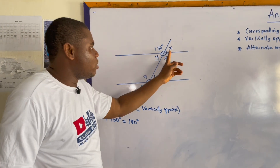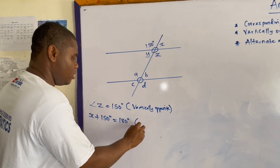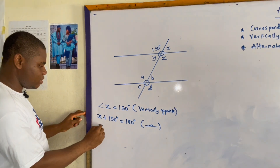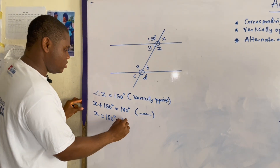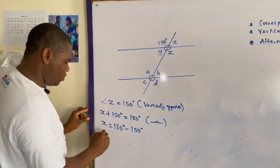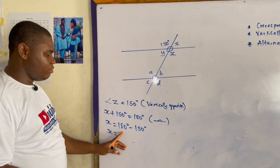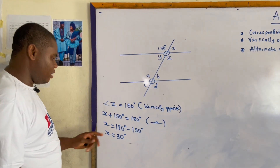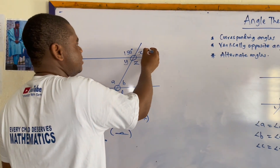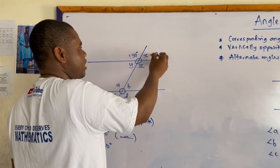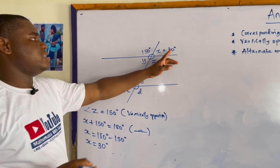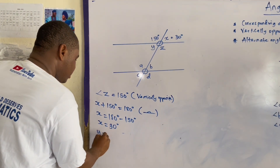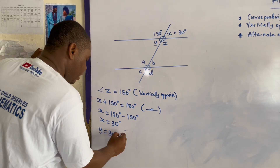We can also find X by saying X plus 150 degrees equals 180 degrees, because this is an angle on a straight line. So X equals 180 degrees minus 150 degrees, which gives us 30 degrees. Since X equals 30 degrees, Y is also 30 degrees because vertically opposite angles are equal.